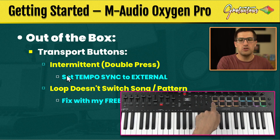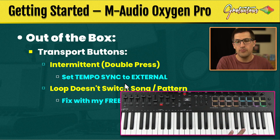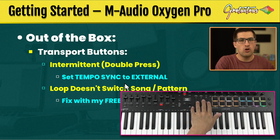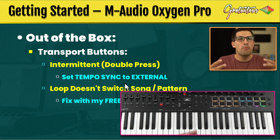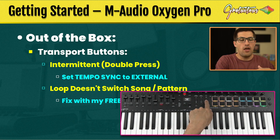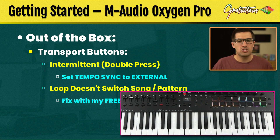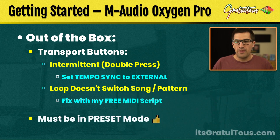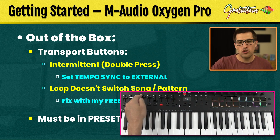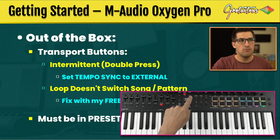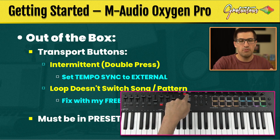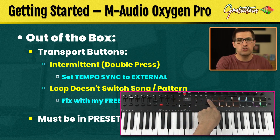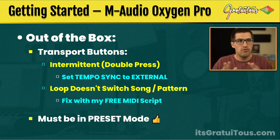So a quick recap: first, you want to make sure you set tempo sync to external — you just do it once through the Oxygen Pro preset editor and then the transport buttons are rock solid. Then if you want normal operation for stop, play, record, and the loop button switching between song and pattern mode, you simply install my free MIDI script. And the last thing — you need to be in preset mode. When you first turn on the Oxygen Pro it's going to be in DAW mode, so just hit preset mode and that's it.